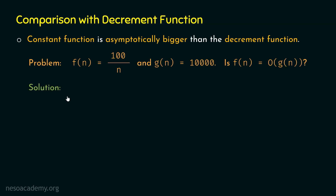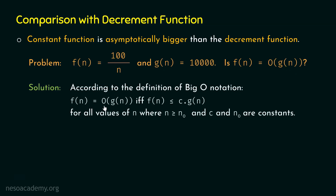Here comes the solution to this problem. We now need to show that f(n) is equal to Big-O of g(n). For this, we will apply the Big-O definition. According to the definition of Big-O notation, f(n) is equal to Big-O of g(n) if and only if f(n) is less than or equal to c · g(n) for all values of n where n is greater than or equal to n0, and c and n0 are constants.